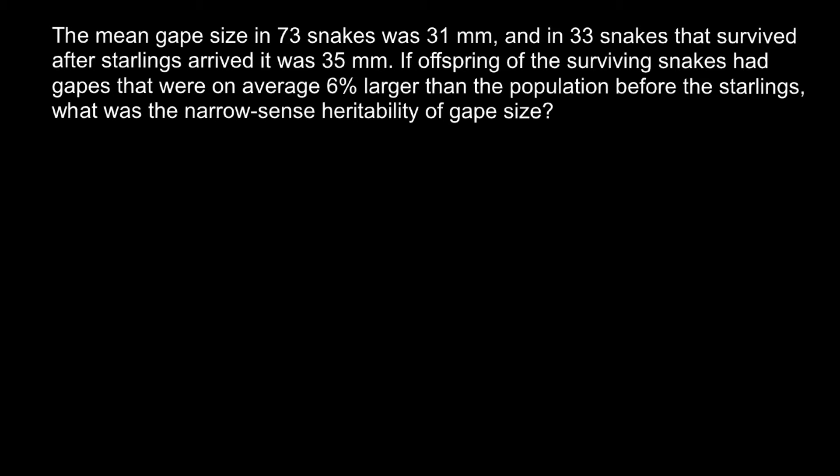Hello and welcome to Nikolai's genetics lessons. Today's second video in a row is based on problems sent by one of my subscribers. Here is the problem: The mean gape size in 73 snakes was 31 mm, and in 33 snakes that survived after starlings arrived it was 35 mm. If offspring of the surviving snakes had gapes that were on average 6% larger than the population before the starlings, what was the narrow-sense heritability of gape size?